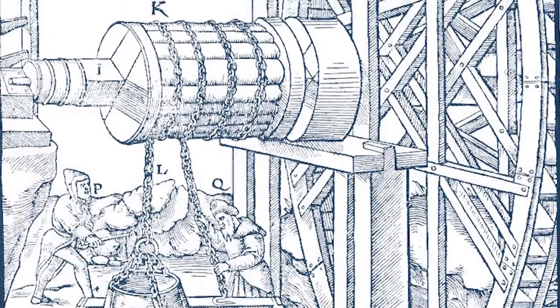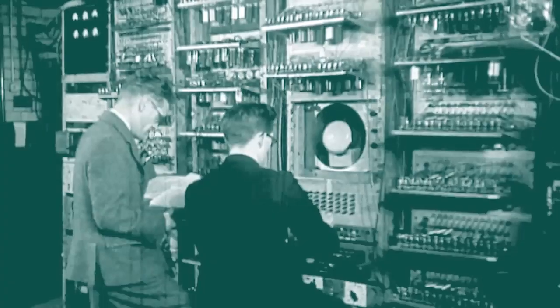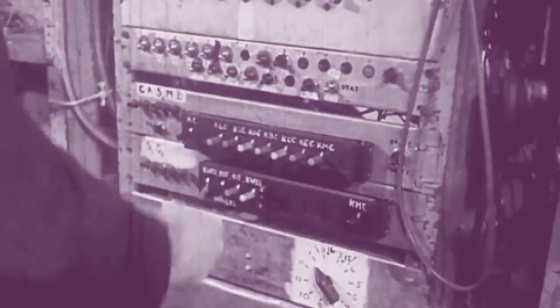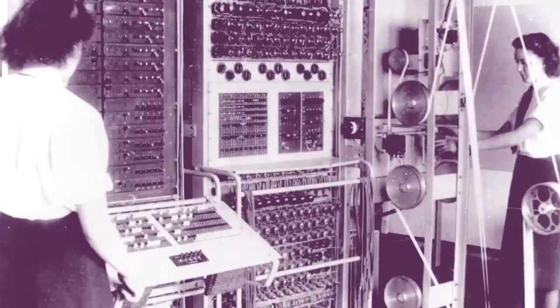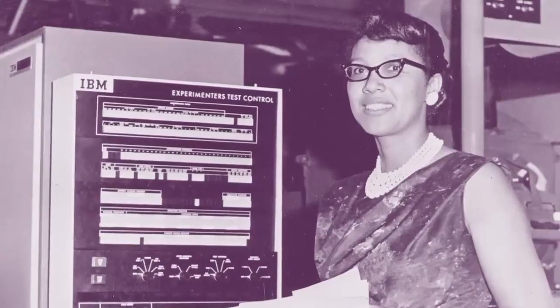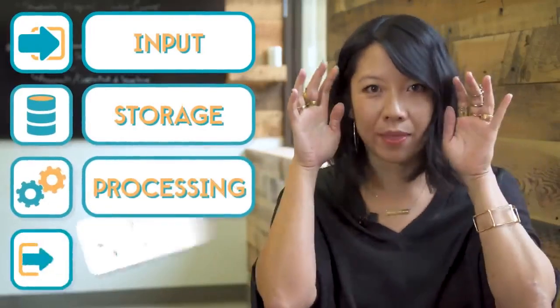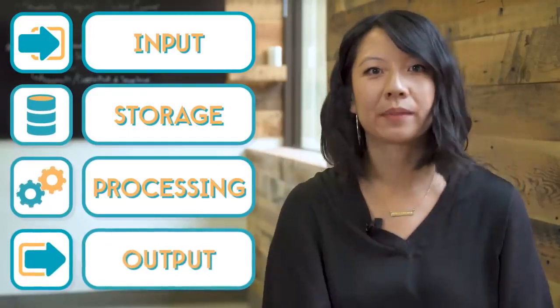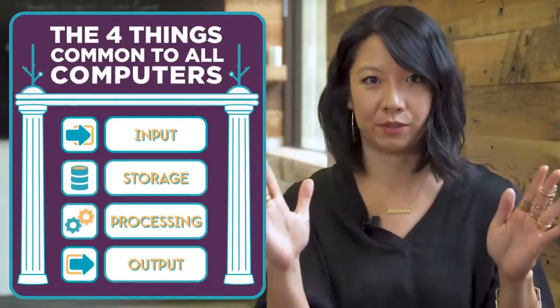Rather than moving or manipulating physical things like dirt and stone, these machines would need to be designed to manipulate information. As the pioneers of computer science explored how to design a thinking machine, they realized that it had to perform four different tasks: it would need to take input, store information, process it, and then output the results. Now this might sound simple, but these four things are common to all computers.